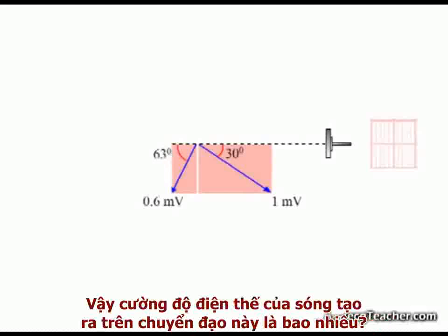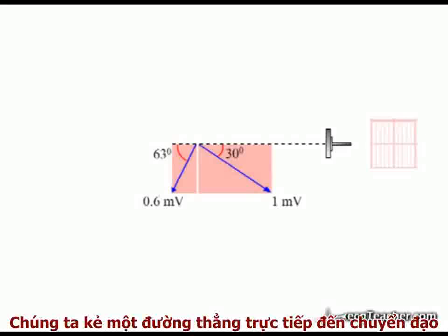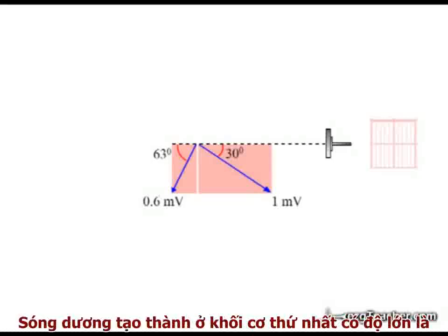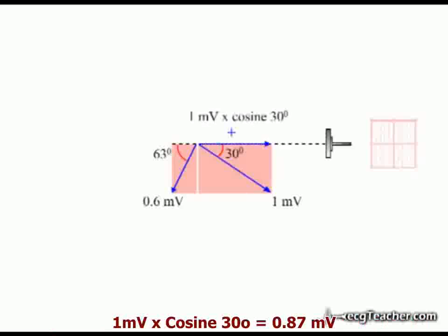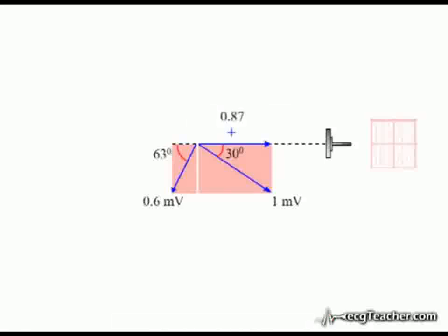What is the magnitude of the deflection produced in the lead? Well, if we let the direct line to the lead define the x-axis, the positive signal generated from section 1 is 1 millivolt multiplied by the cosine of 30 degrees. This works out at 0.87 millivolts.